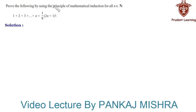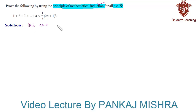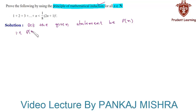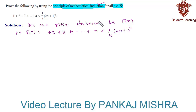Prove the following by using the principle of mathematical induction for all n belonging to natural numbers. We have an inequality and we need to prove it by using mathematical induction. Let the given statement be P(n) such that 1 plus 2 plus 3 all the way up to n is less than one-eighth of (2n+1) whole square.